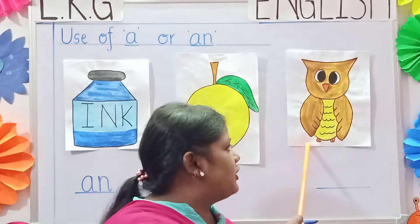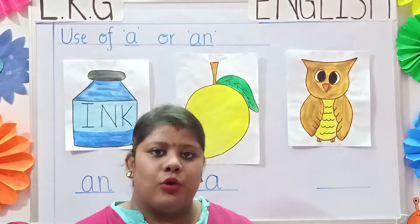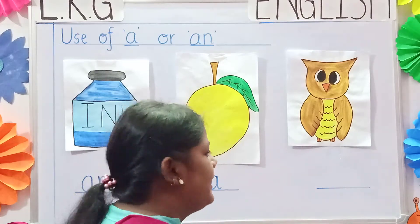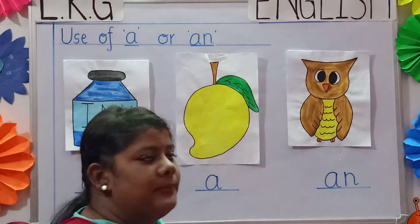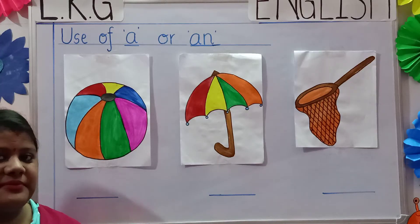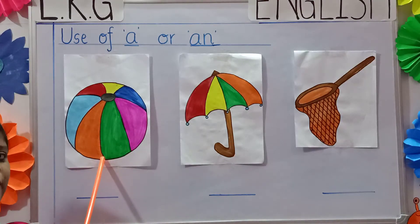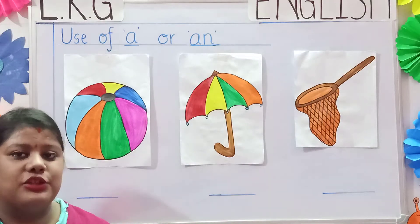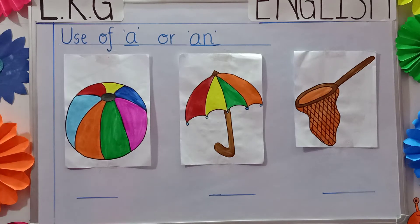Now see the next picture. This is a picture of an owl. Owl starts with the letter O, and O is a vowel, so we will write 'an' — A, N — an owl. Now see the next picture. It is a picture of a ball. Ball starts with the letter B, and B is a consonant, so we will write 'a' — a ball.